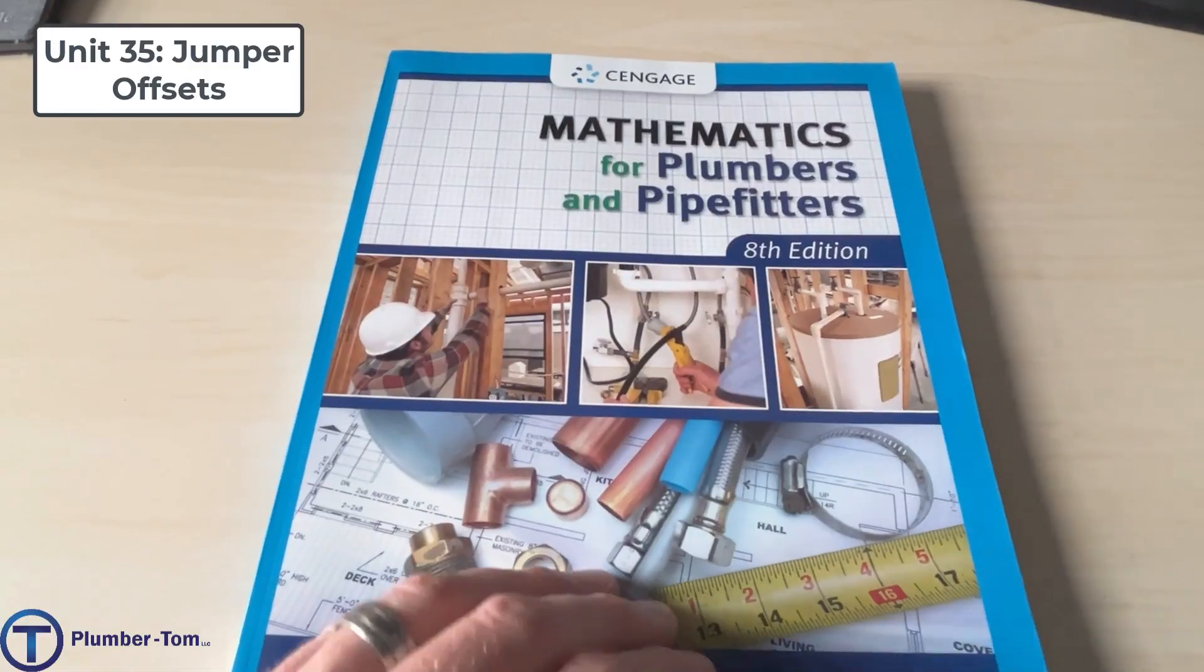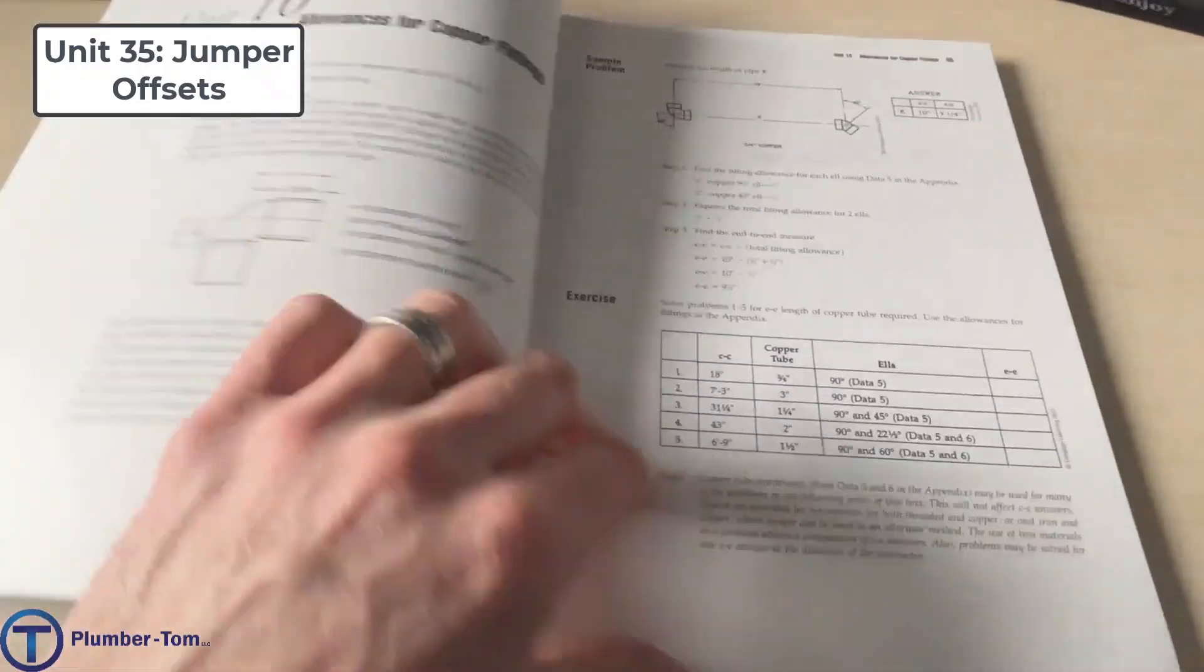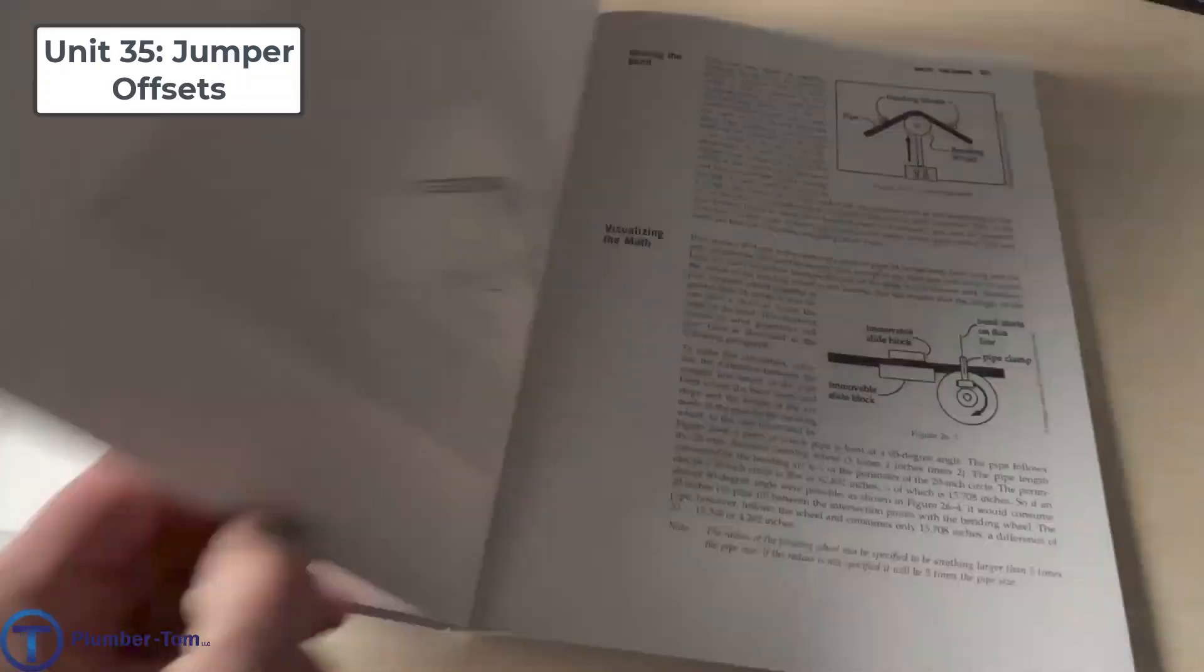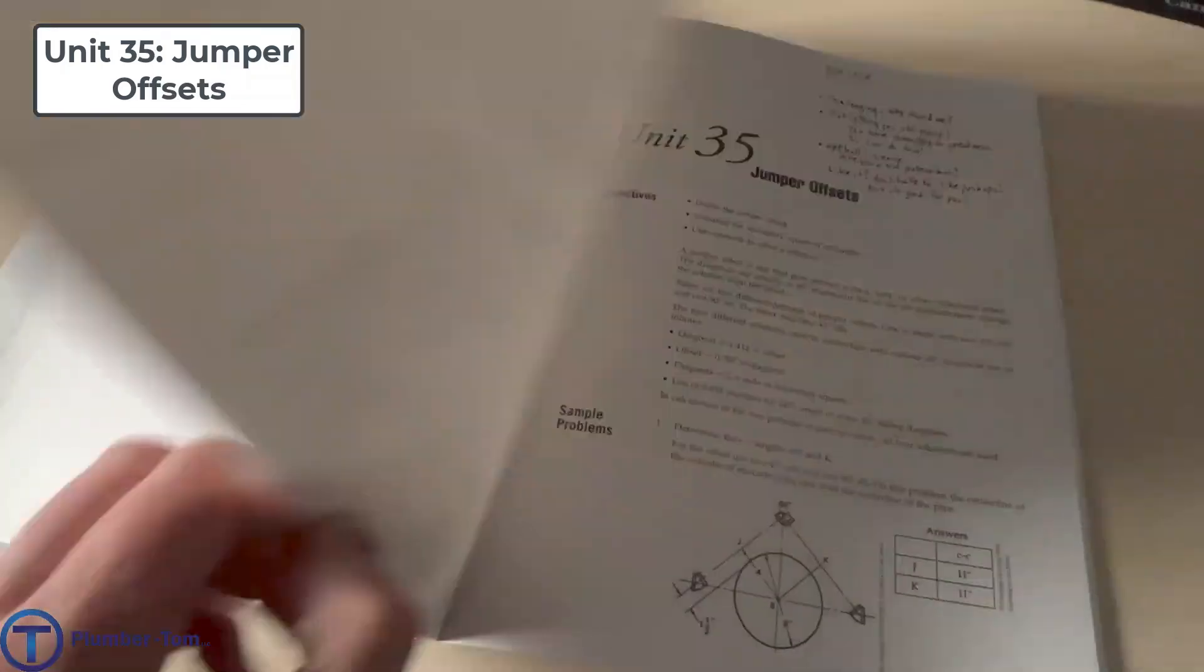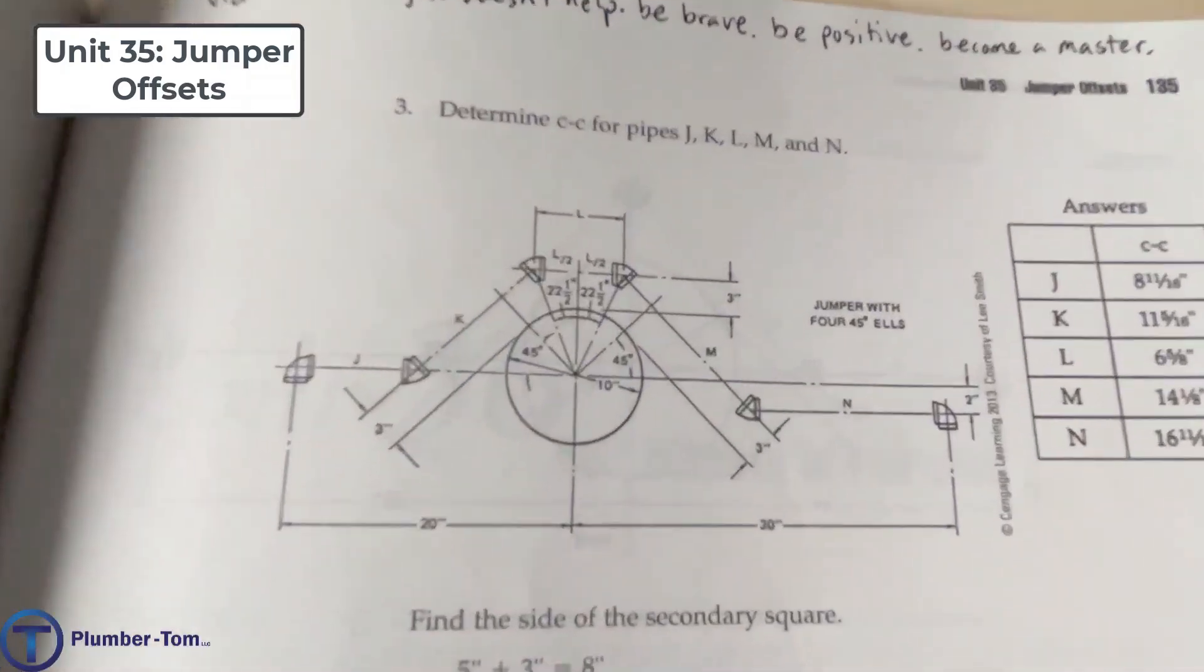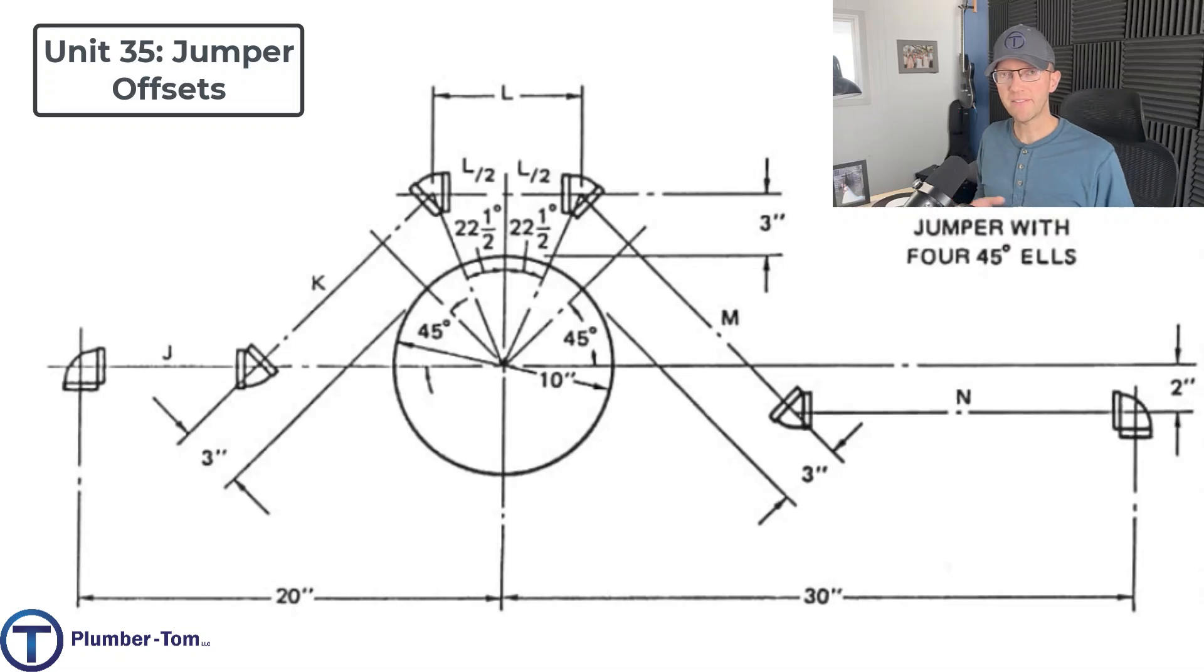Unit 35. Here we have it. The sample problem three, sizing up our opponent. Let's see what this is all about. Similar to last time, we're going to be figuring out center to center lengths. This time we have J, K, L across the top, M, and N. And we'll figure these out in a similar pattern as last time.